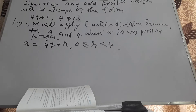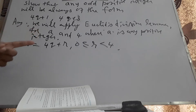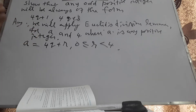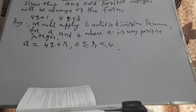Here A is known as the dividend, B is the divisor, Q is the quotient, and R is the remainder. If the remainder R equals 0, then A is exactly divisible by B, or B divides A. R will be a quantity between 0 and B — exactly 0 or any value between 0 and B.